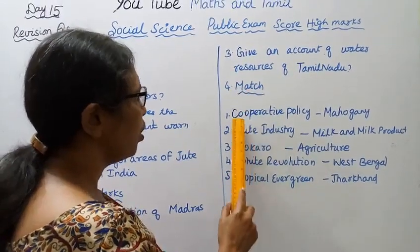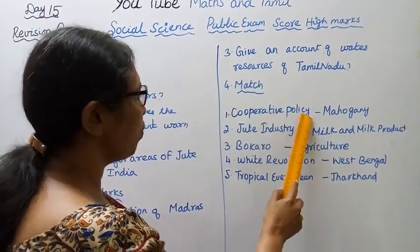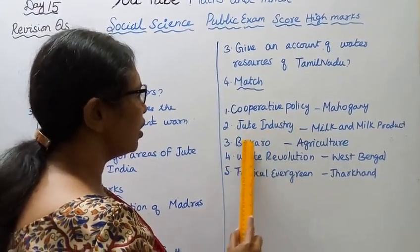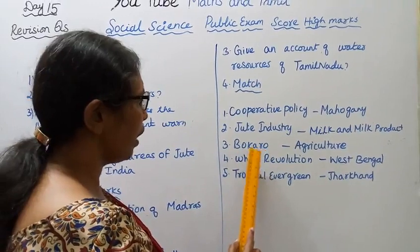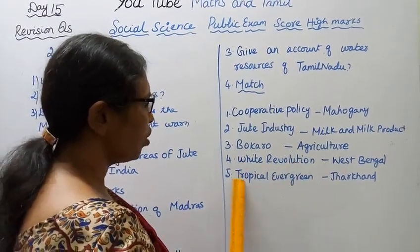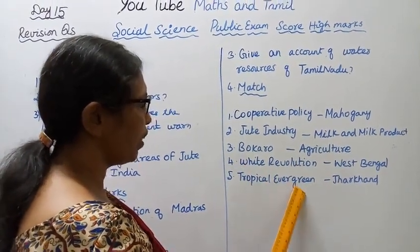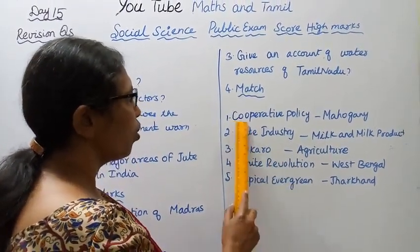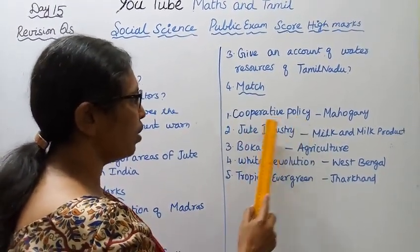Fourth — match the following. Left side: Cooperative policy, Jute industry, Bokaro, White Revolution, Tropical Evergreen.